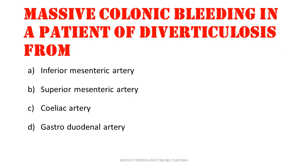Colonic bleeding in a patient of diverticulosis is from which artery? Inferior mesenteric artery, superior mesenteric artery, celiac artery, and gastroduodenal artery. We might have seen similar questions like in case of duodenal ulcer or gastric ulcer where the bleeding comes from. The answer is superior mesenteric artery.